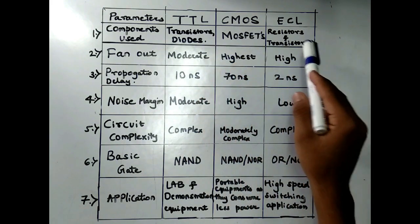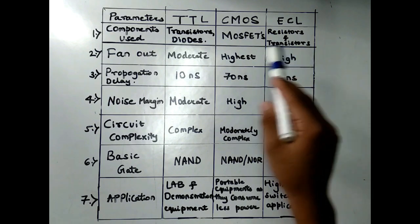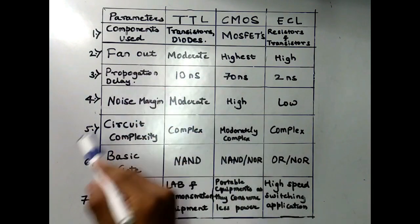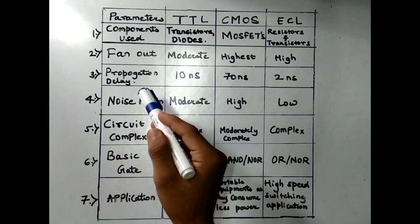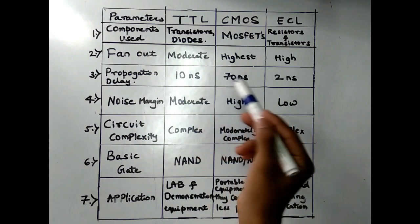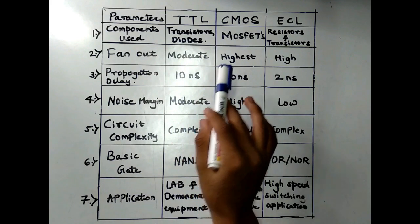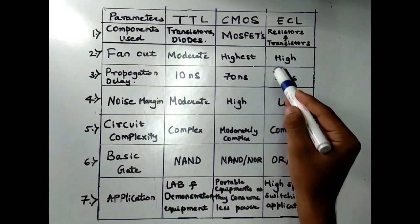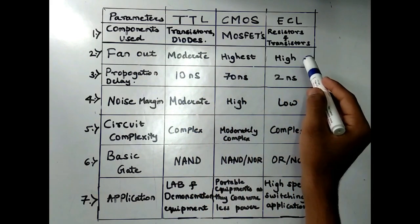The second parameter is Fanout. It means the number of inputs that can be connected to a specific output. The fanout of TTL is moderate, the fanout of CMOS is highest, and the fanout of ECL is high.